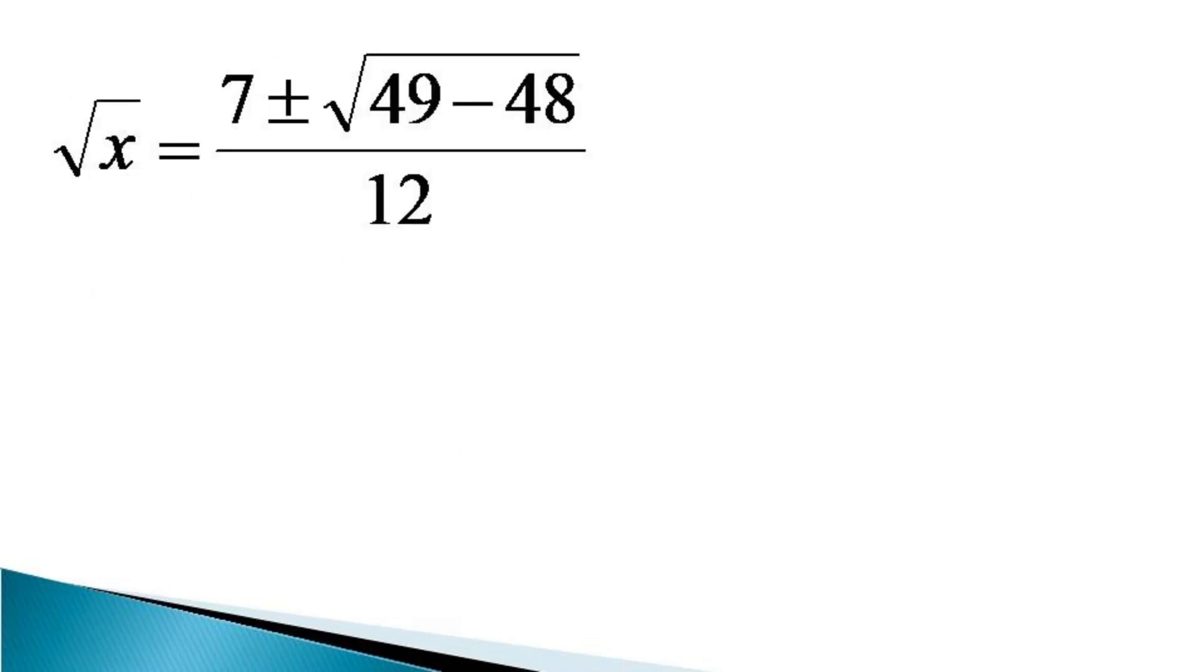This is simplified as root x is equal to 7 plus minus under root 49 minus 48 divided by 12 and further it can be simplified as root x is equal to 7 plus minus 1 by 12.